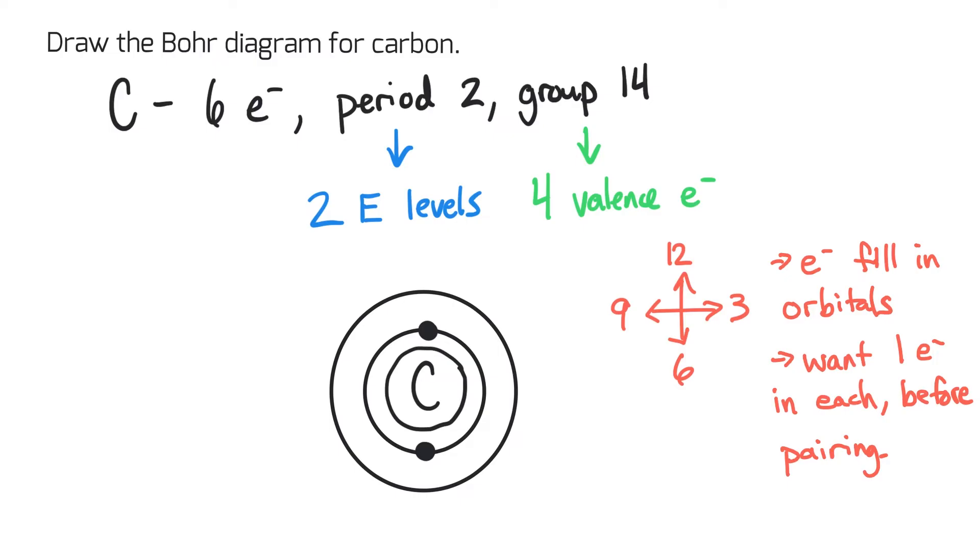Notice when we count it up, 1, 2, 3, 4, 5, 6. There are 6 electrons, so that makes sense.